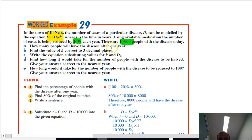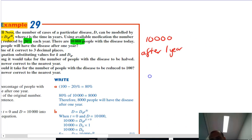How many people will have the disease after one year? So don't really need a formula here to do it. We can just say, all right, there's 10,000 today. After one year there will be 10,000 times 1 minus 0.2.